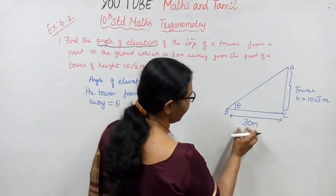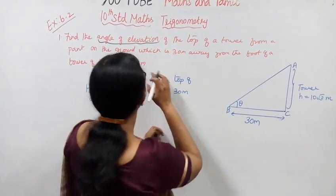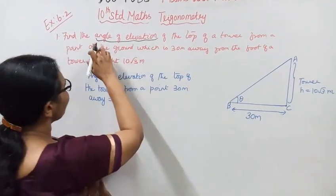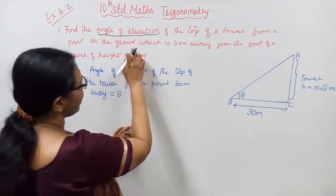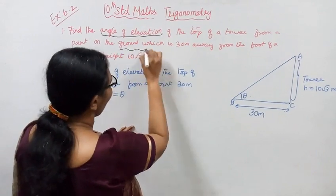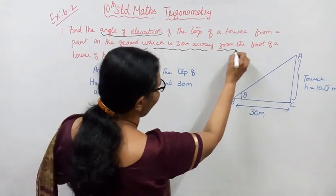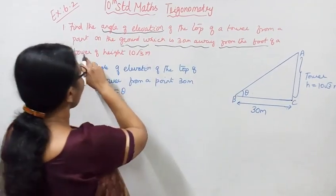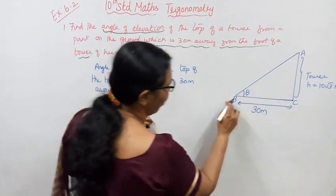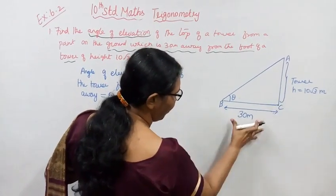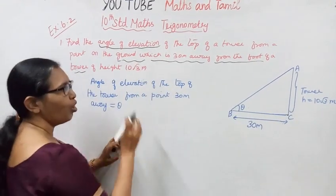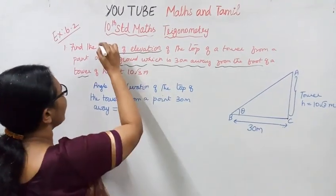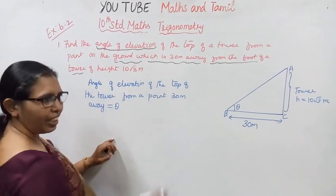So the tower is here, the foot of the tower is on the ground, and the distance from the point to the foot of the tower is 30 meters. The height of the tower is 10 root 3 meters. We need to find the angle of elevation.